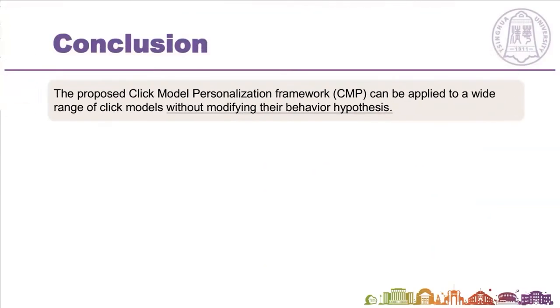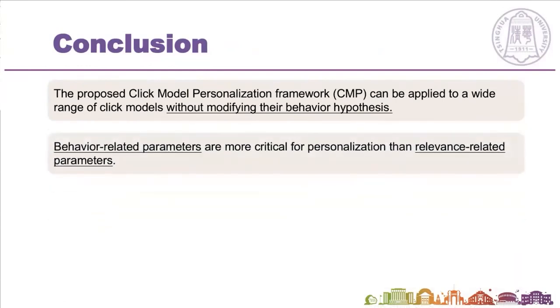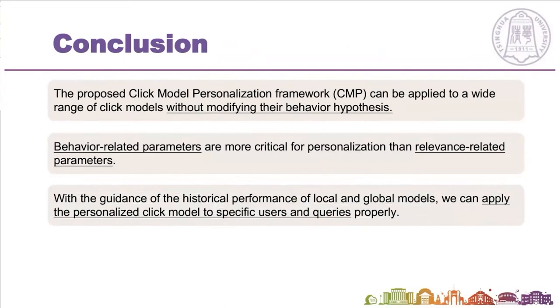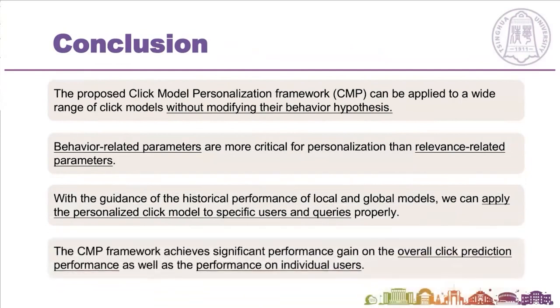In this work, we propose a click model personalization framework, CMP, which can be applied to a wide range of click models without modifying their behavior hypotheses. From the experimental results, we found that behavior-related parameters are more critical for personalization than relevance-related parameters. With the guidance of the historical performance of local and global models, we can apply the personalized click model to specific users and queries properly. The CMP framework achieves significant performance gain on overall click prediction performance as well as performance on individual users.